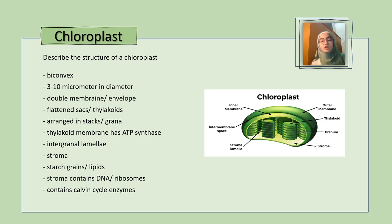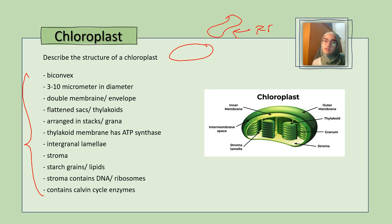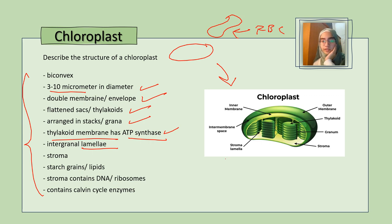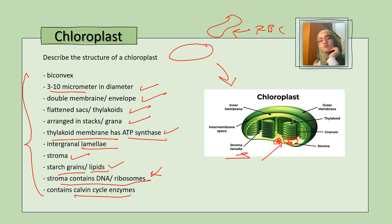You must know how to describe the structure of a chloroplast in your exam. Key points: chloroplasts are bi-convex, 3–10 micrometers in diameter, and have an envelope. They have thylakoids and grana, a thylakoid membrane containing ATP synthase, and lamellae. The stroma contains starch grains, lipids, DNA, and ribosomes. DNA and ribosomes are used for protein synthesis and contain Calvin cycle enzymes — basically the enzymes used for photosynthesis.